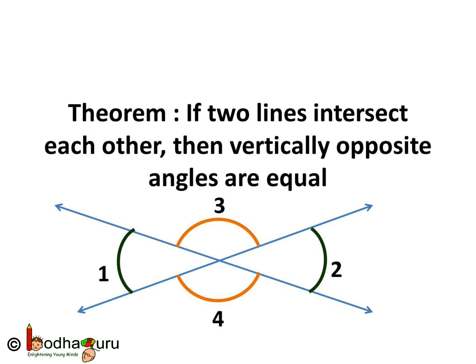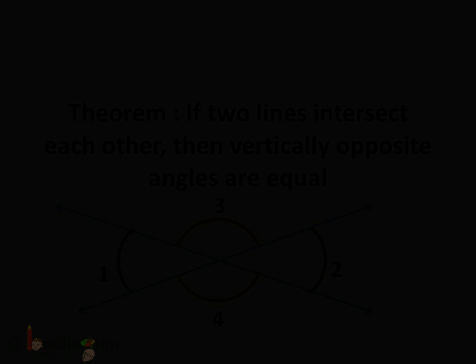So here angle 1 is equal to angle 2 and the other pair is angle 3 is equal to angle 4. Here we go. Thank you.